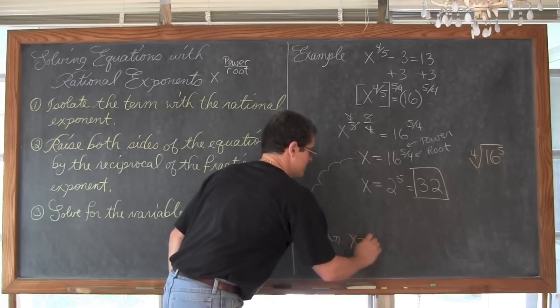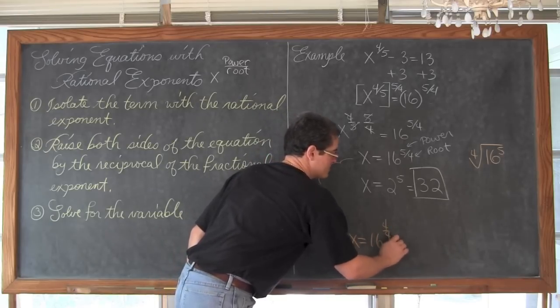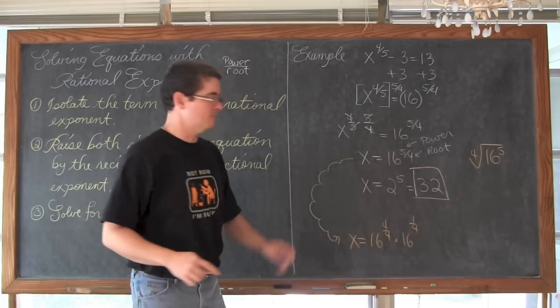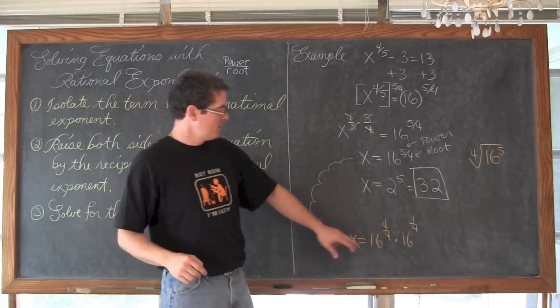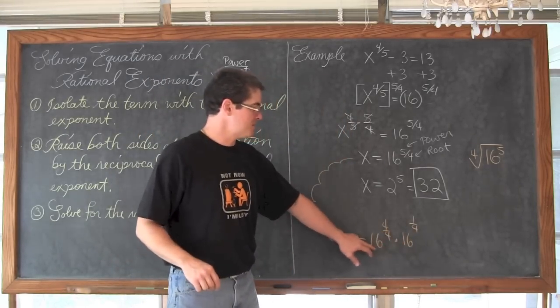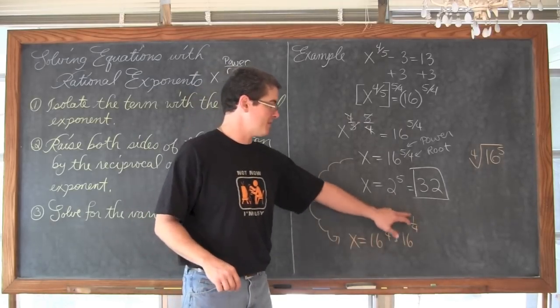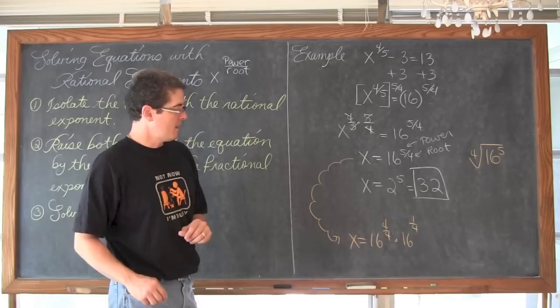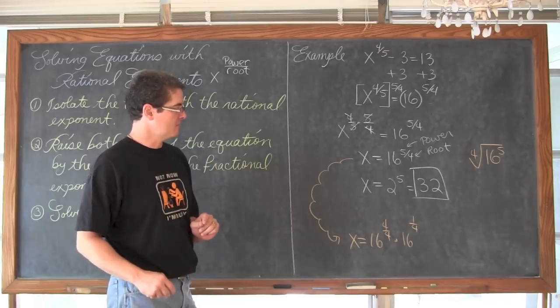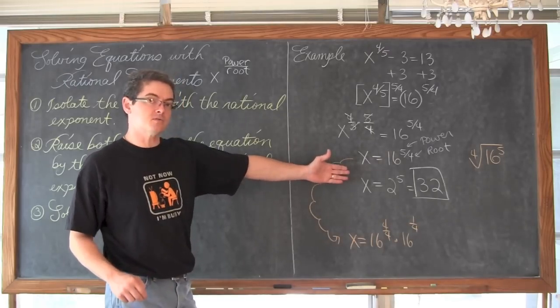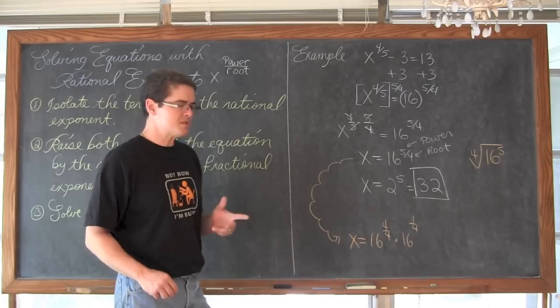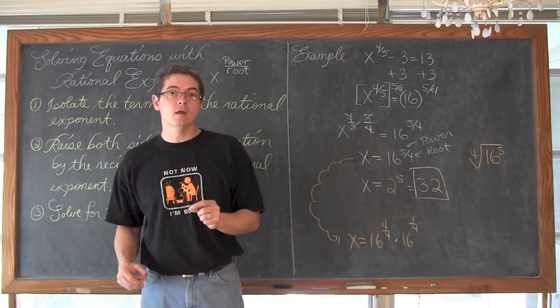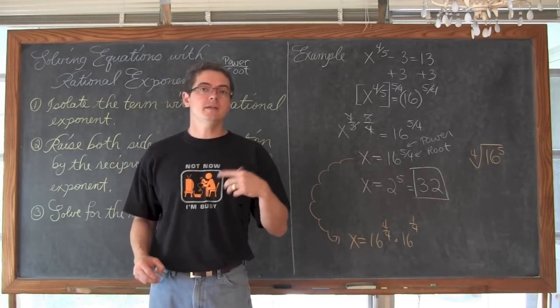I can say that x is equal to 16 to the 4 fourths power times 16 to the 1 fourth power. Where when you multiply like bases, you add the exponents. And 4 over 4 plus 1 over 4 is indeed 5 fourths. However, I am just remembering here that I forgot one of my answers. Do you know what I have forgotten? What is the square root of 9? The square root of 9 is 3. Well, it is also negative 3.